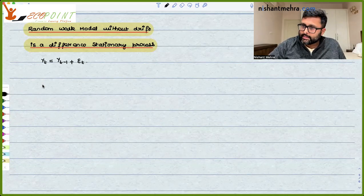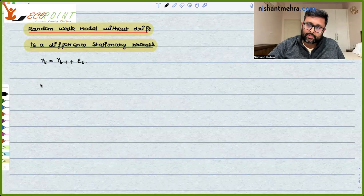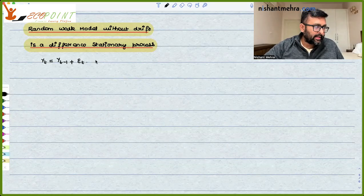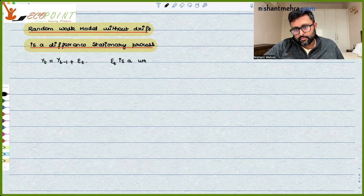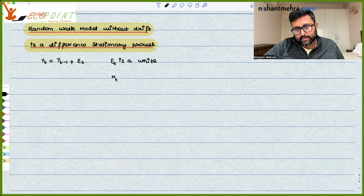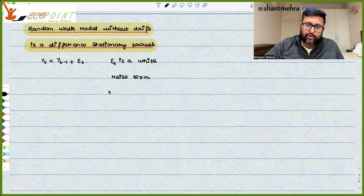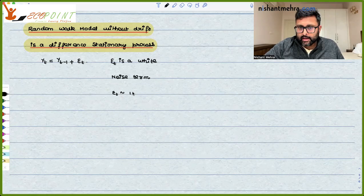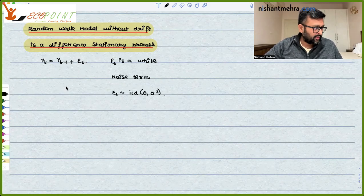So yt is the current value, yt minus 1 is the previous value, epsilon t is a white noise term. White noise term would mean that epsilon t is independently identically distributed with mean 0 and variance sigma square.